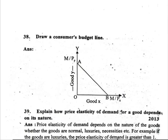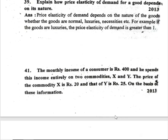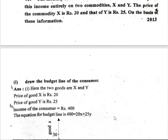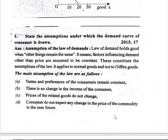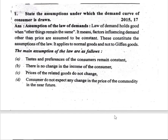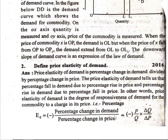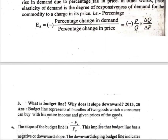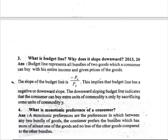Question 38: draw the consumer budget line. Question 39: explain how price elasticity of demand for goods depends on its nature. Question 41 is also important. Question 1: state the assumptions under which the demand curve of a consumer is drawn. Question 2: define price elasticity of demand. Question 3: what is the budget line, and why does it slope downwards?